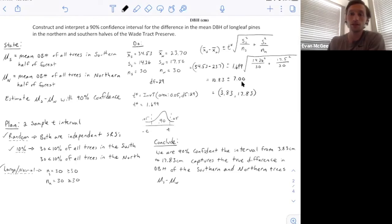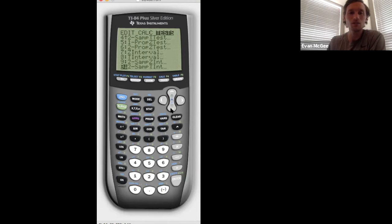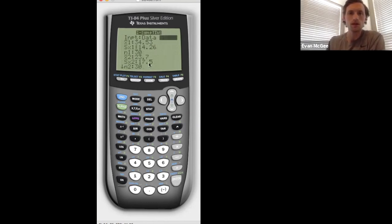Now that we've completed the interval, I want to show you how to do this on your calculator in a fourth of the time. Open the calculator, go to STAT and then TESTS, and find the two-sample t-interval. Remember, the two-sample z-interval is only when you know the population standard deviations, which is very rare. We don't know the standard deviations of all the trees, so it's a two-sample t-interval. They gave us summary statistics rather than raw data, so we'll select Stats.